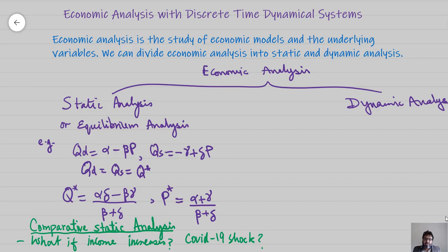Likewise, we can also see the impact of a COVID-19 shock. In this case, both demand and supply are affected. Demand decreases, so parameter alpha decreases. On the supply side, gamma would take a larger value, and because there is a negative sign, this represents a negative effect on quantity supplied. When we analyze such changes in model parameters on equilibrium values, that falls under comparative static analysis.